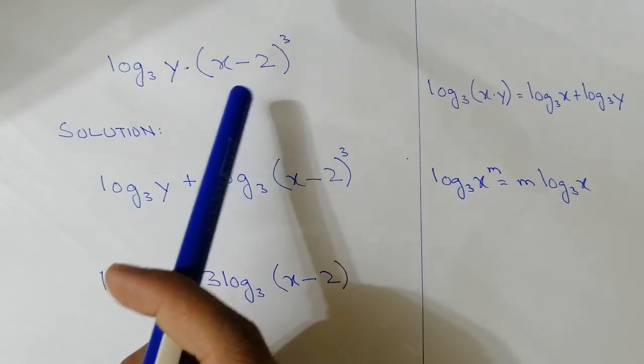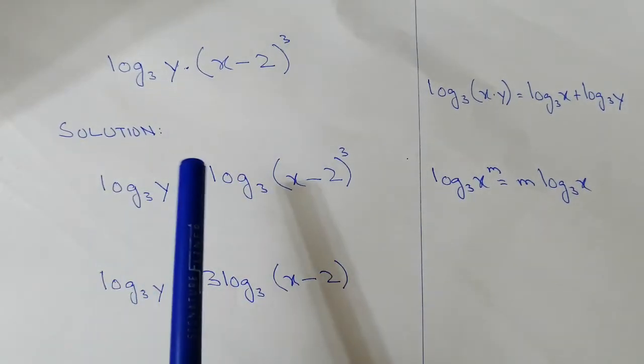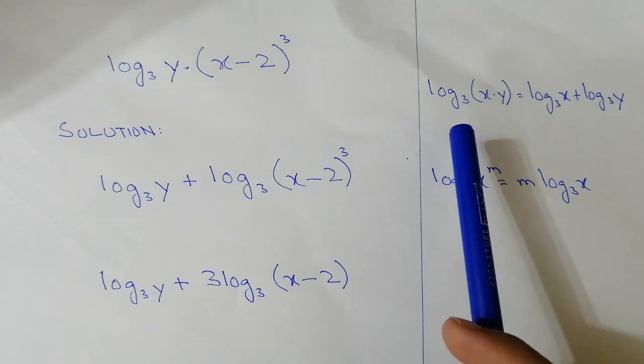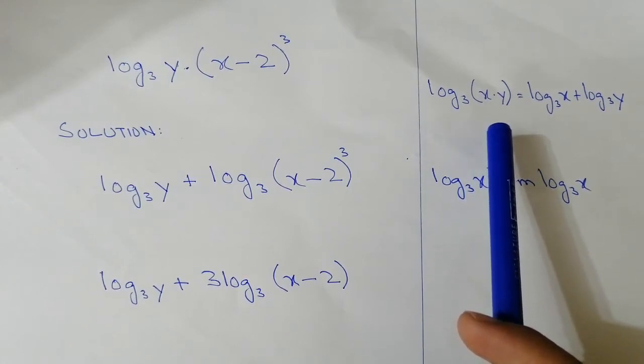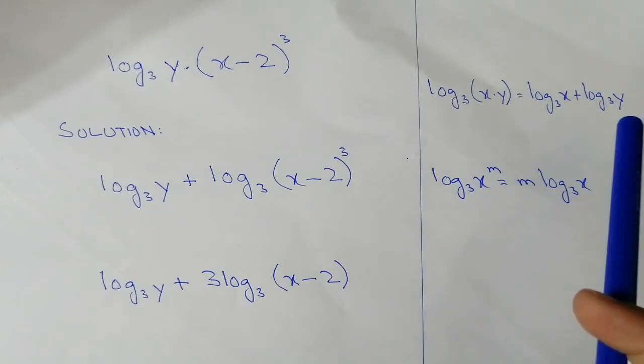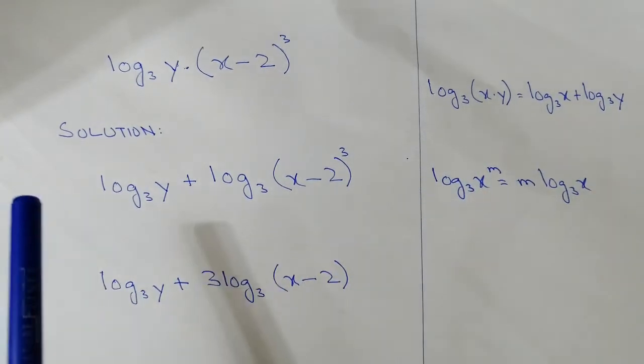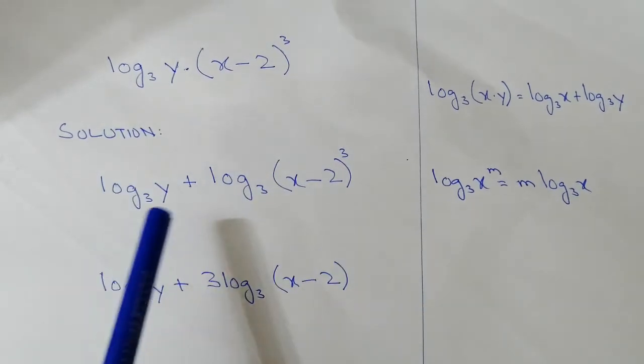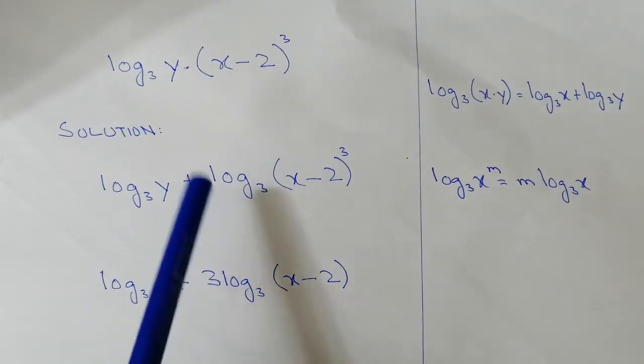Now first of all, we are using this property: log(x·y) = log x + log y. So same, we are using that over here: log₃ y + log₃(x-2)³.